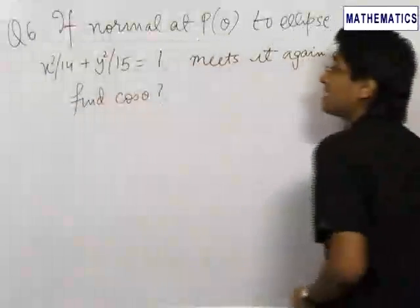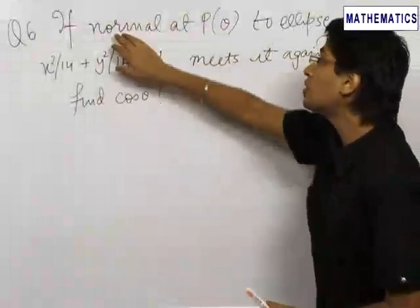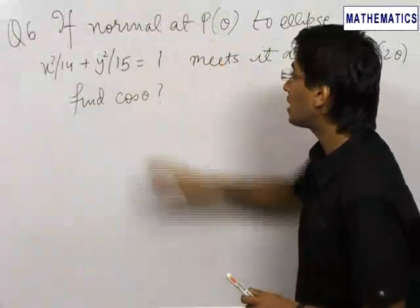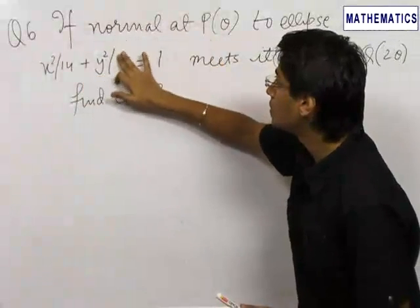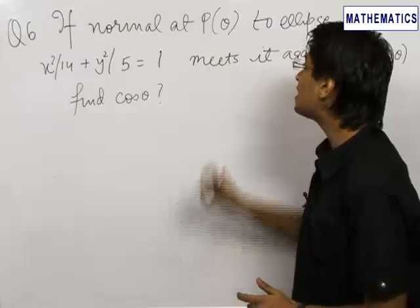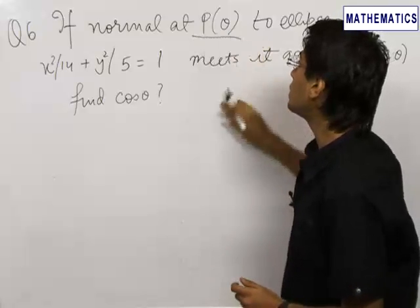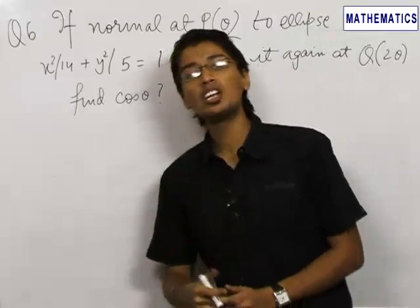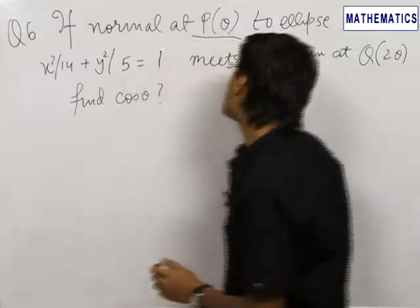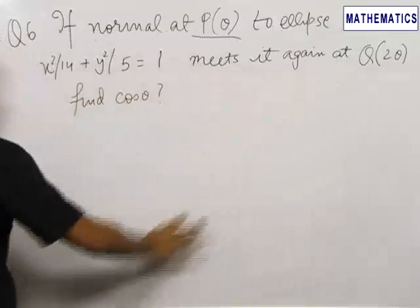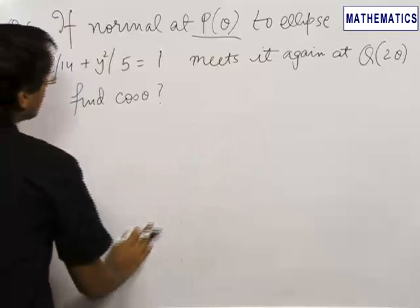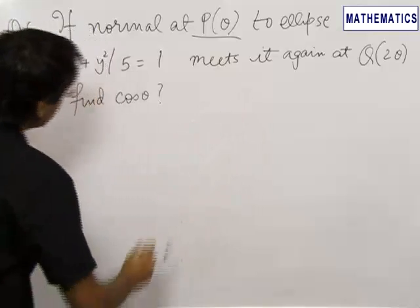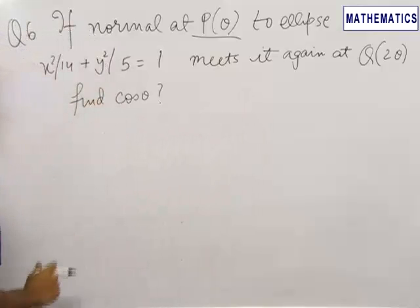Our next problem says that if a normal to the ellipse x²/14 + y²/5 = 1 at the point P, where the parameter of P is θ, that is P is (a cosθ, b sinθ), meets the ellipse again at Q, where the parameter is 2θ, that is Q is (a cos2θ, b sin2θ), then we need to find the value of cosθ.